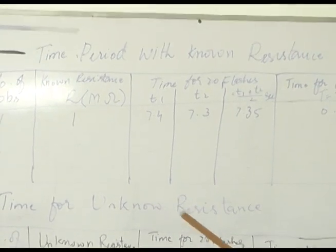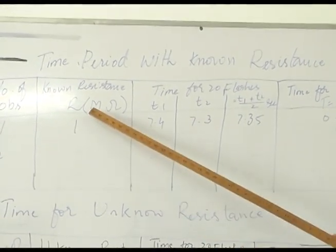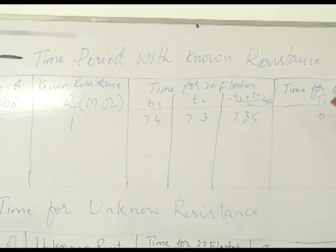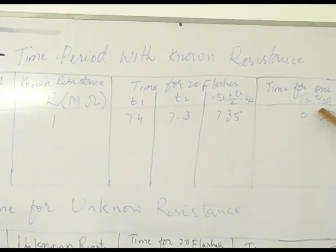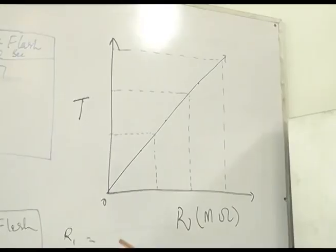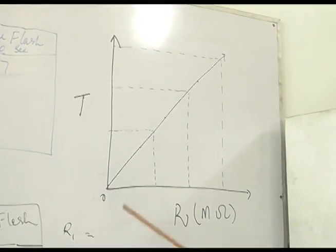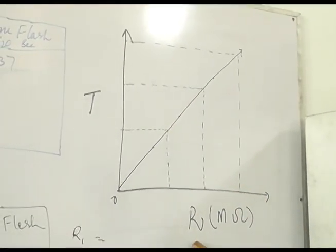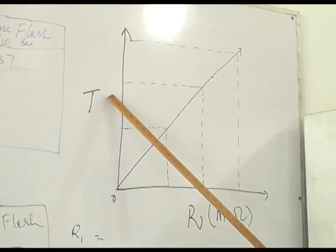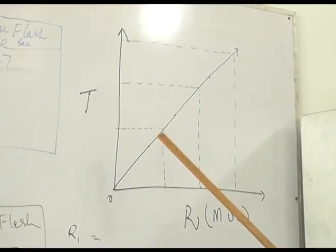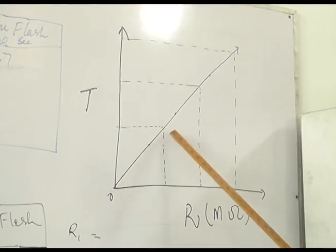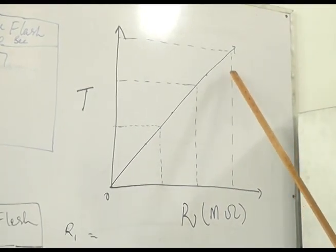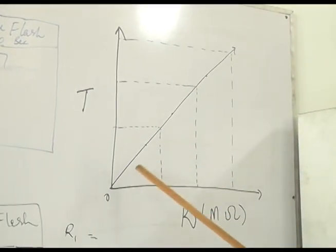Now we will draw a graph between R and T. This is the graph between R and T. We will put the values in the graph and this graph is in a straight line.